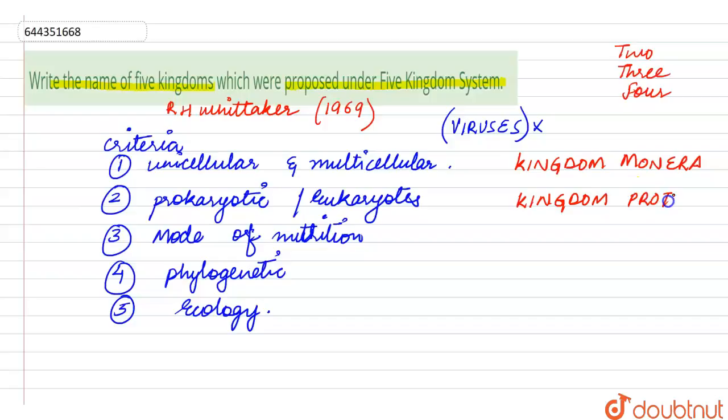This included the unicellular eukaryotes, so all the unicellular eukaryote members including diatoms, dinoflagellates, euglena, slime molds, and the protozoans were considered in this.